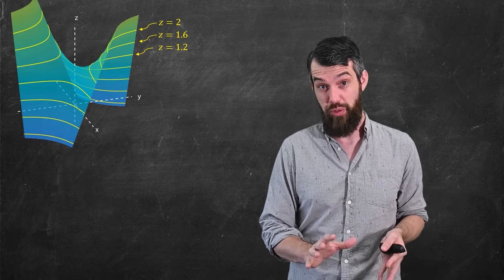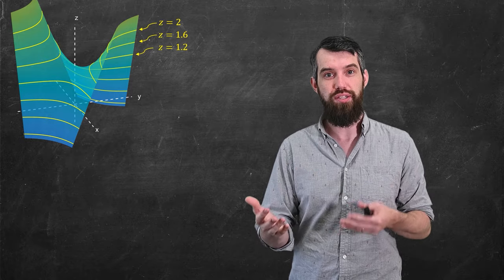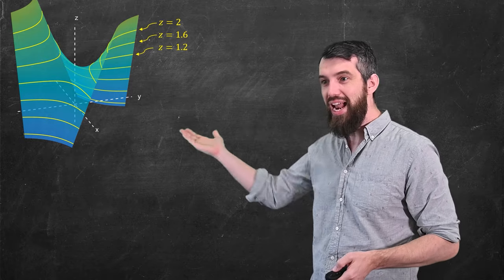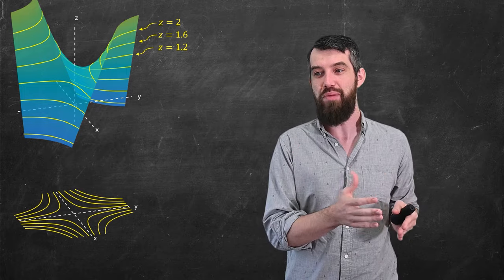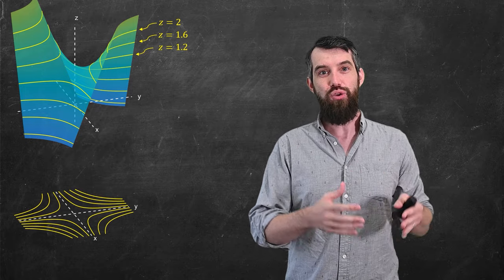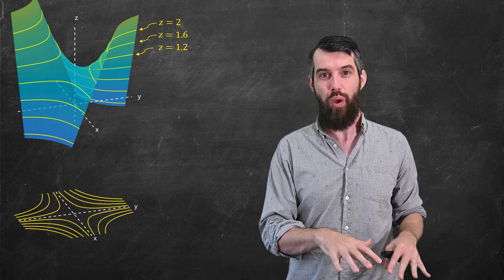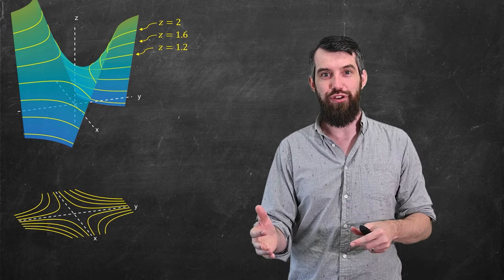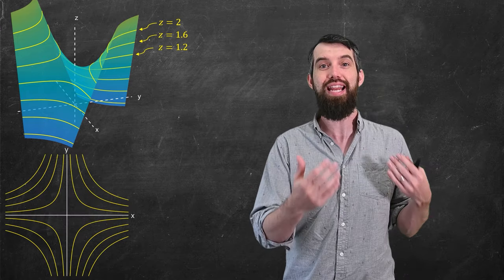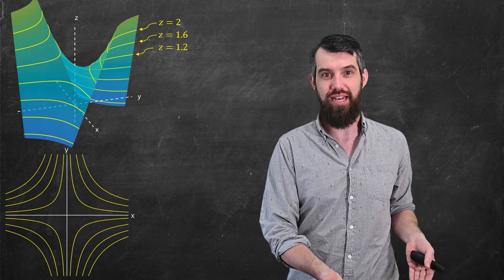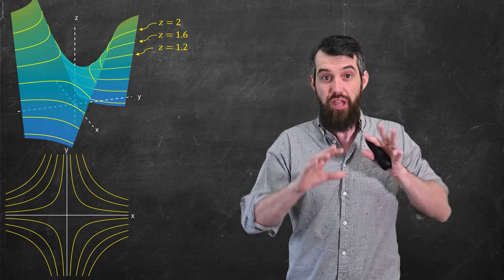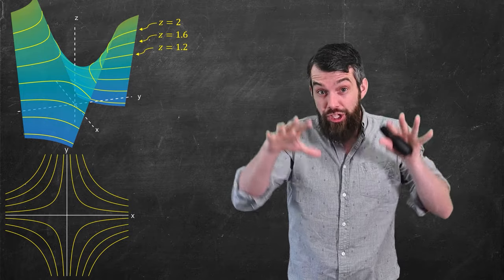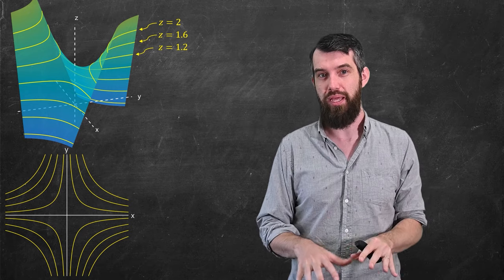This is the three-dimensional picture, but there's also a corresponding two-dimensional picture. If I just take all those level curves and isolate them down in the xy plane, you get a picture in the xy plane. I've drawn this with perspective, but maybe I'll just rotate it to the standard way it's presented. You have your normal xy plane and your list of contours, which are really the projection of the contours down onto the xy plane.